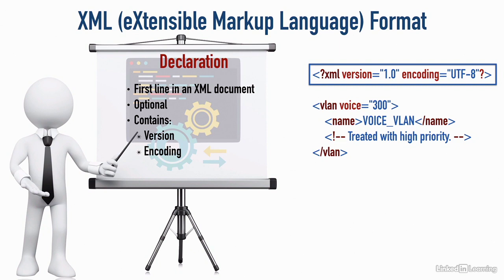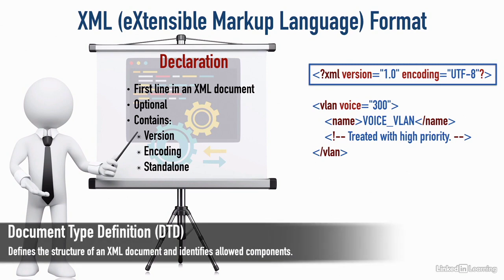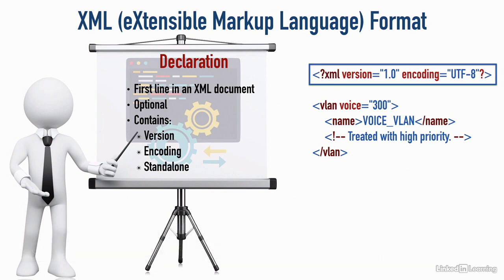There's something else that you rarely see but it's in the documentation, so I wanted to mention it — it's standalone. You can say standalone equals yes or standalone equals no in quotes. This relates to a DTD, a Document Type Definition, which defines the structure of an XML document and what components it's allowed to have. If the DTD is encoded directly in the XML file, then standalone equals yes; if it's external, then standalone equals no. But in the real world, we would rarely, if ever, use standalone.